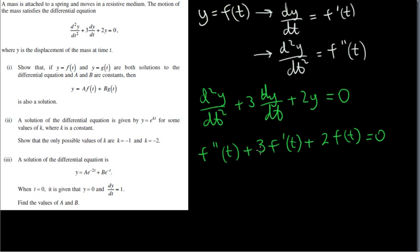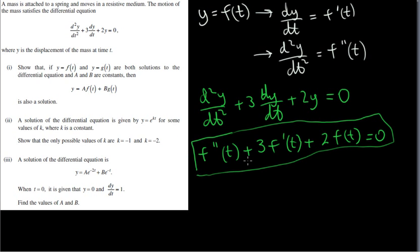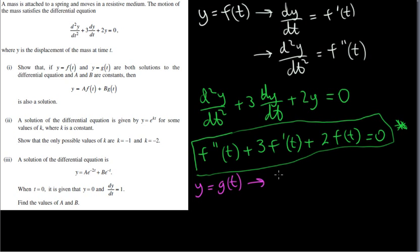This is really just a change in notation. So we have this relation, and it's just a consequence of f(t) being a solution of this differential equation. Of course, we could do the same for g(t). With y = g(t), we're going to get exactly the same form, but instead of f, we have g.